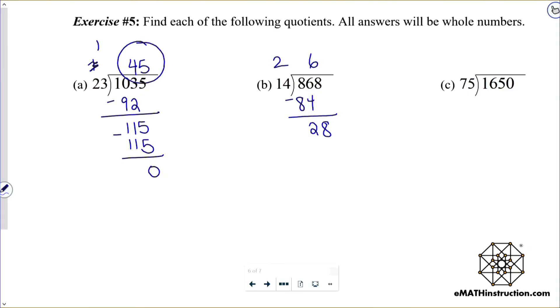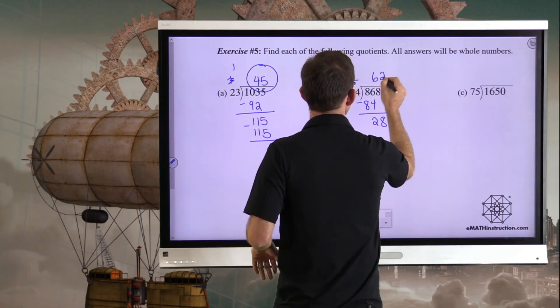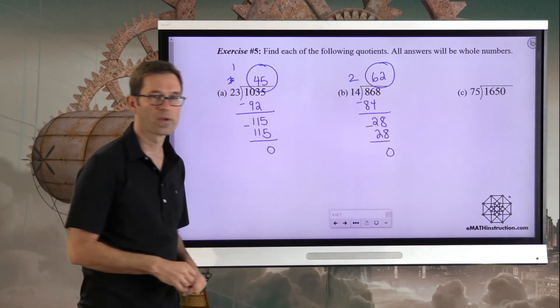That two is smaller than the 14. I'm golden. I'm going to drop my eight down. Now this is pretty easy to think about. How many times does 14 go into 28? 14 goes into 28 two times. Two times 14 is 28. Subtract, remainder of zero.